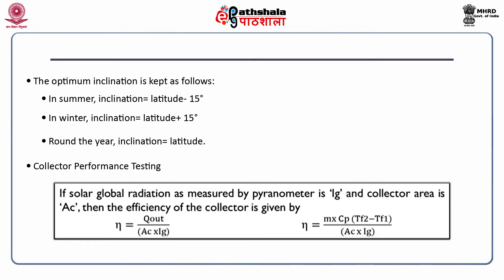For collector performance testing, if the solar global radiation measured by a pyranometer is I_G and the collected area is A_C, then the efficiency is: η = Q_output / (A_C × I_G), or substituting Q_output: η = (m × C_p × (T_f2 − T_f1)) / (A_C × I_G), which gives the collector performance.